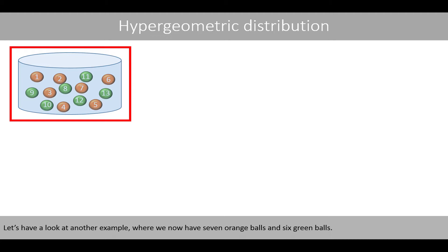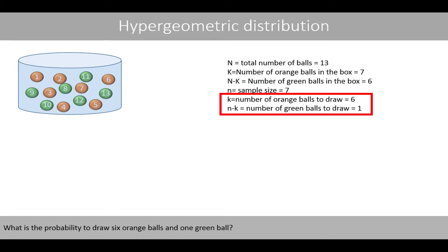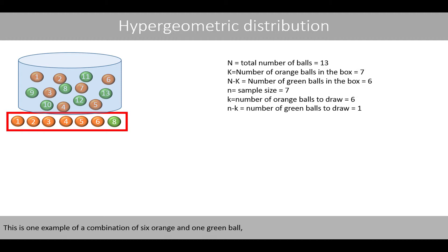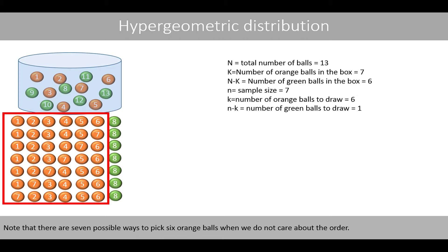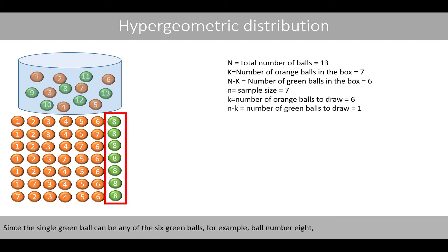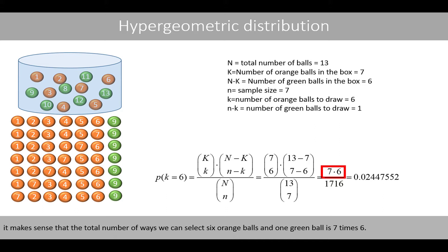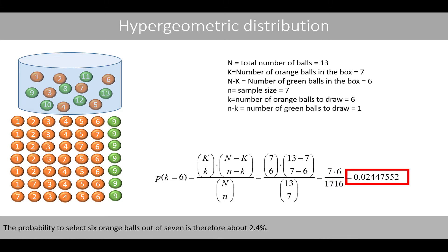Let's look at another example where we now have 7 orange balls and 6 green balls. Suppose that we draw 7 balls without replacement. What is the probability to draw 6 orange balls and 1 green ball? There are 7 possible ways to pick the 6 orange balls when we do not care about order. Since the single green ball can be any of the 6 green balls, the total number of ways to select 6 orange and 1 green ball is 7 times 6. The total number of possible combinations when we select 7 balls out of 13 is 1716. The probability to select 6 orange balls out of 7 is therefore about 2.4%.